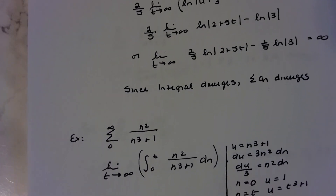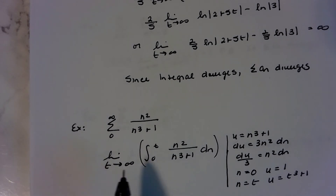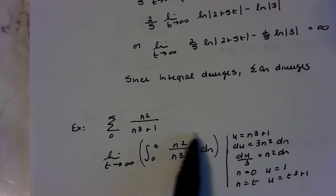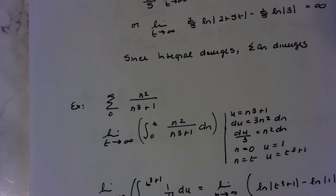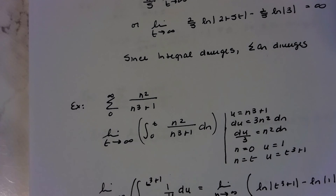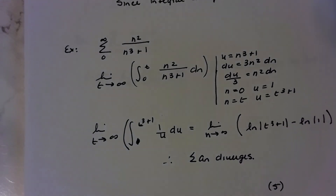Here's another one: square root over n squared plus 1. I rewrote it as an improper integral, did a u substitution, changed the bounds, and integrated. Again, plugging in infinity shows the improper integral diverges, so the original series also diverges.